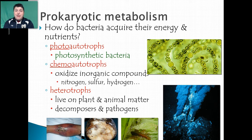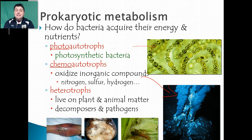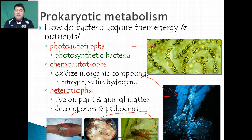Prokaryotes have a number of metabolic pathways to obtain energy, and different bacteria can do so in different ways. We have photoautotrophs — our blue-green or cyanobacteria, which do photosynthesis. Deep at the bottom of the ocean where there is no sunlight, bacteria are able to synthesize food using inorganic compounds like nitrogen, sulfur, and hydrogen being released from within the earth. And then of course we have bacteria that are heterotrophs — those that decompose plant and animal matter, and those that are pathogens and consume living tissues.